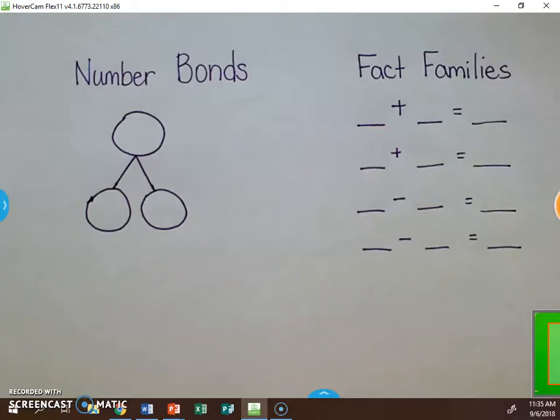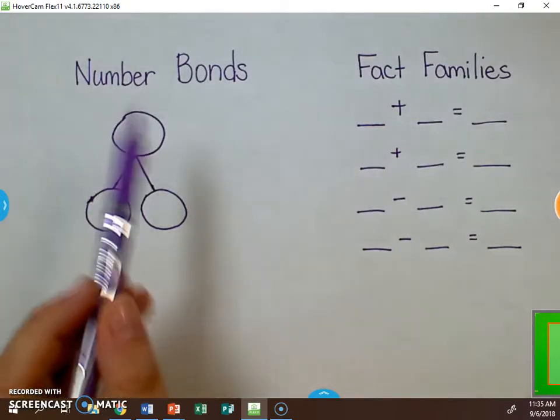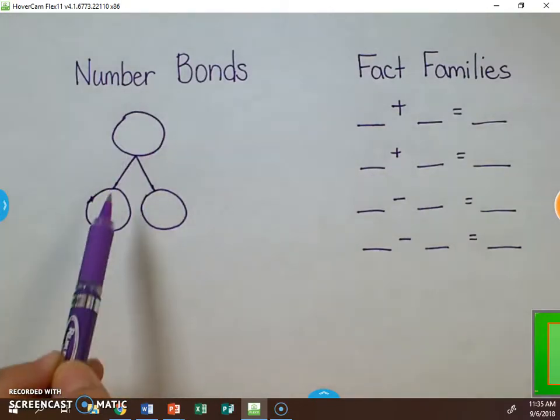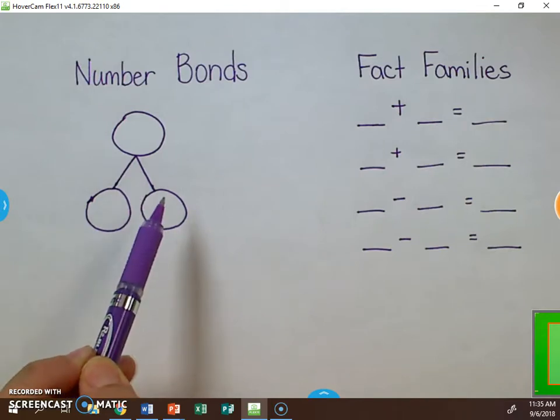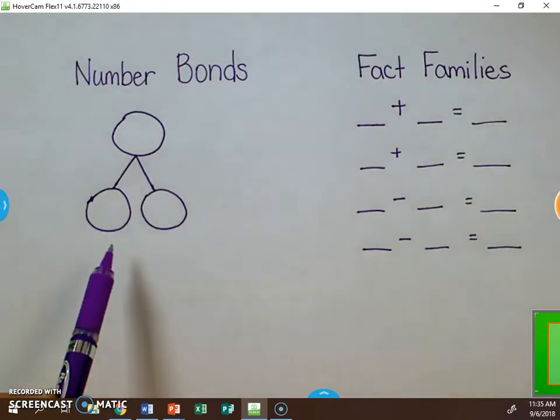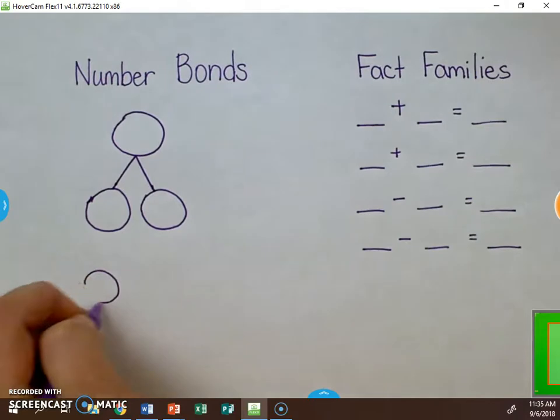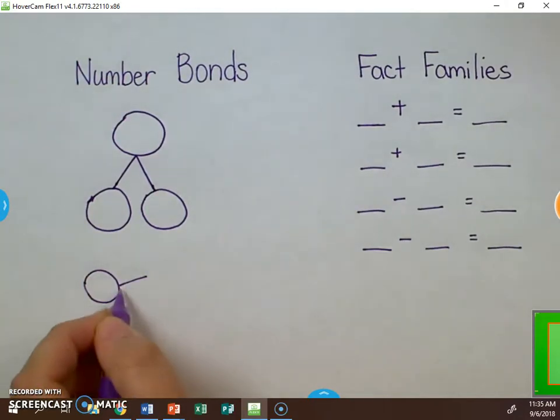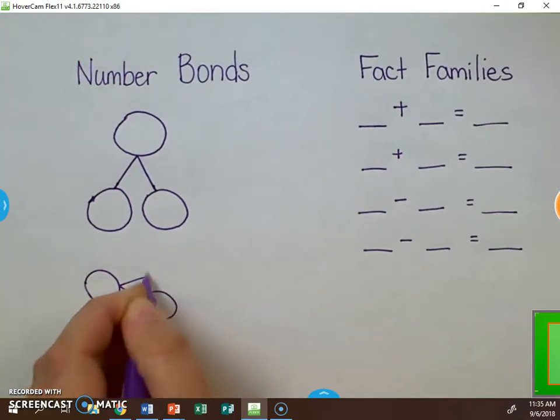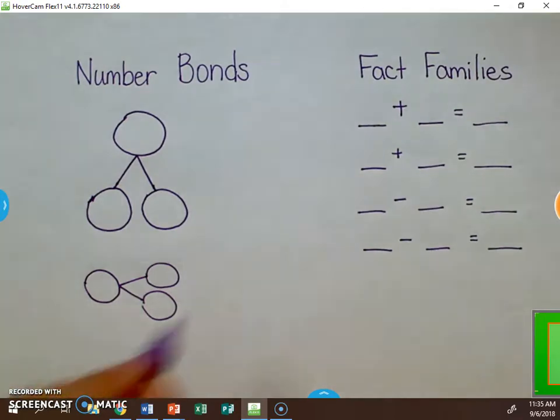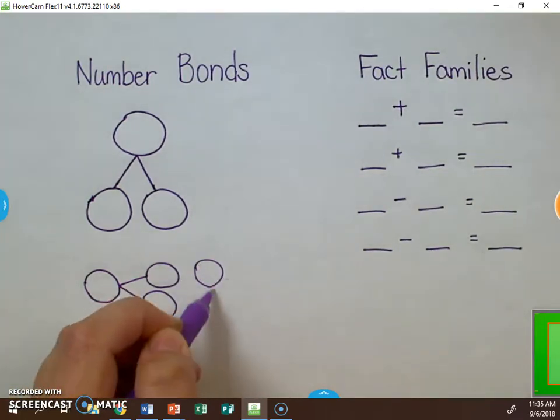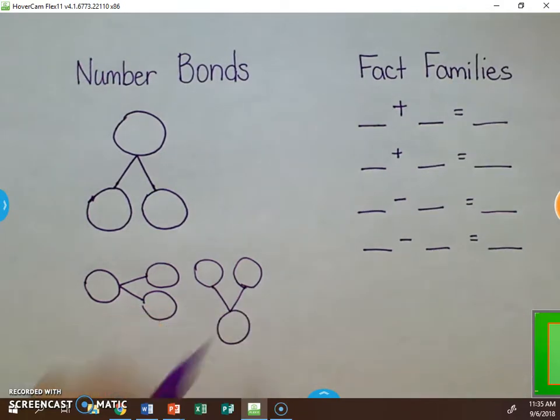Number bonds are used to show how three numbers work together. First, you draw a circle at the top, then make an upside-down V coming off of it with two circles at the bottom. This can also be drawn another direction, to the side, or even upside down. The direction simply does not matter.